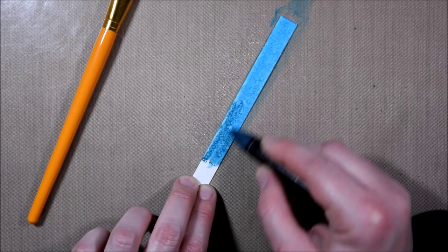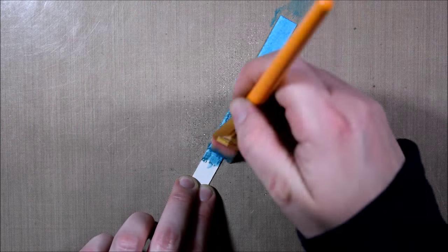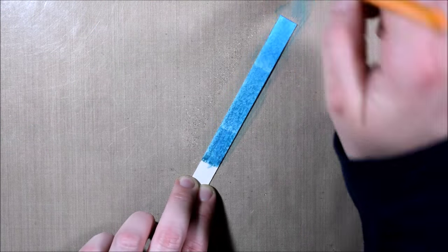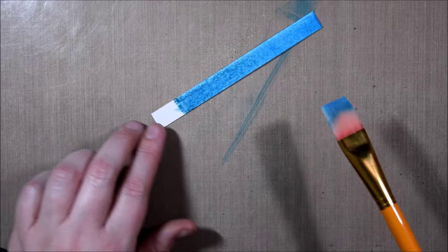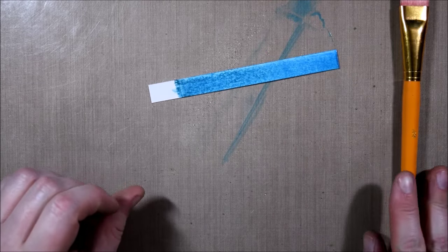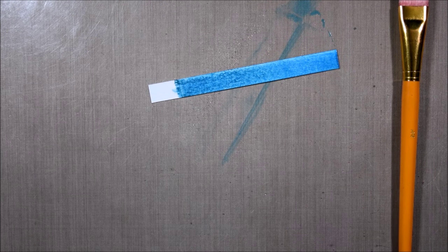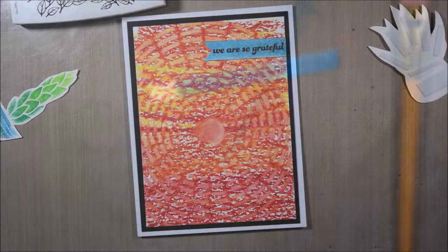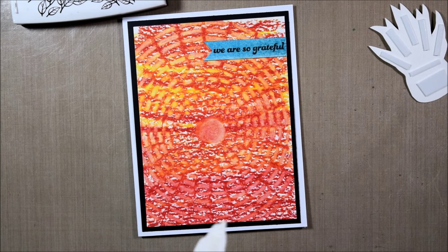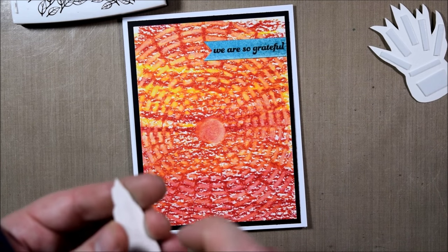You could just color directly on and create a watercolored background with them by scribbling and then pulling it out with a brush. That's all I'm doing there, and once that is dry I can stamp a simple sentiment on.